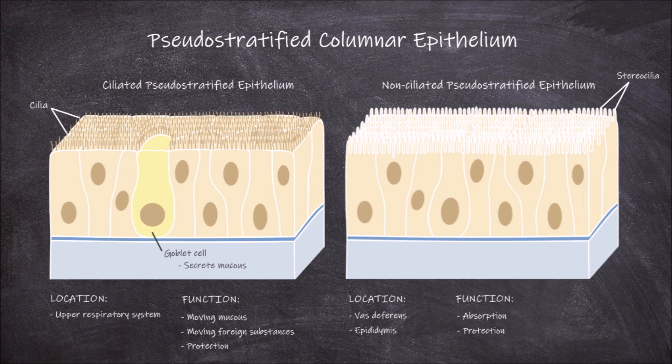The mucus secreted by goblet cells also helps in protecting the epithelium itself by removing foreign particles and pathogens from the upper respiratory tract. And that concludes this video on pseudostratified columnar epithelium.